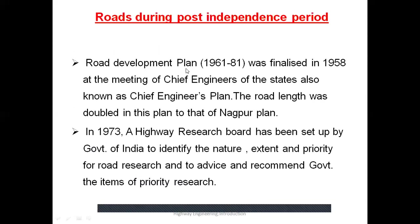The road development plan from 1961 to 1981 — a 20-year plan — was finalized in 1958 at a meeting of chief engineers and is also called the Chief Engineers Plan. The road length was proposed to be nearly doubled compared to the Nagpur Plan. In 1973, a Highway Research Board was set up by the Government of India to identify the nature, extent and priority for road research and to advise the government on items of priority research.